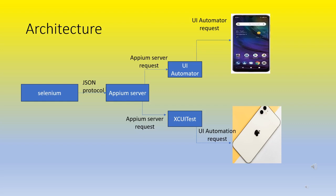Selenium is the client and the communication uses the JSON Wire Protocol. The JSON Wire Protocol is sent to the APM server. When you come to the APM server, you can write code in Node.js. Node.js is a scripting language and there is a tool in the APM server.